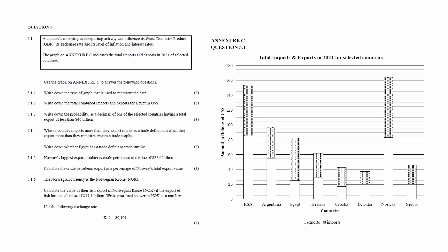Question 5.1 consists of one finance question, one probability question, and four data handling questions that were designed to assess your understanding of bar graphs, exchange rate, and the cost of international imports and exports of goods.